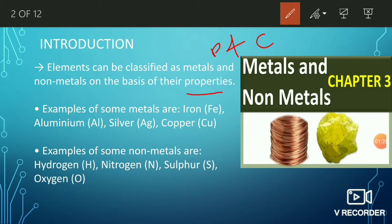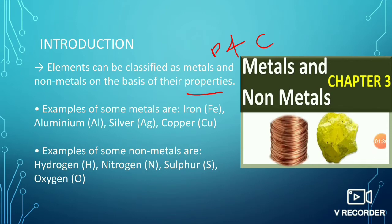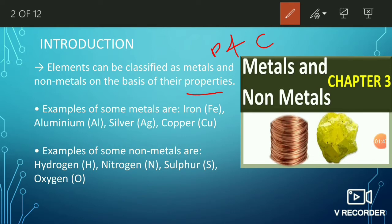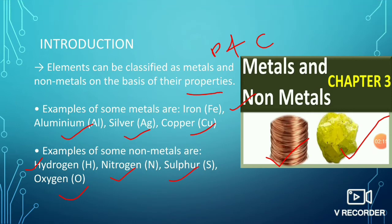We associate metals with hard or shiny objects. Examples of metals include iron, aluminum, silver, and copper. Non-metals are generally lighter objects — for example hydrogen, nitrogen, sulfur, and oxygen. These are shown in the figure. These are the physical properties of metals and non-metals.